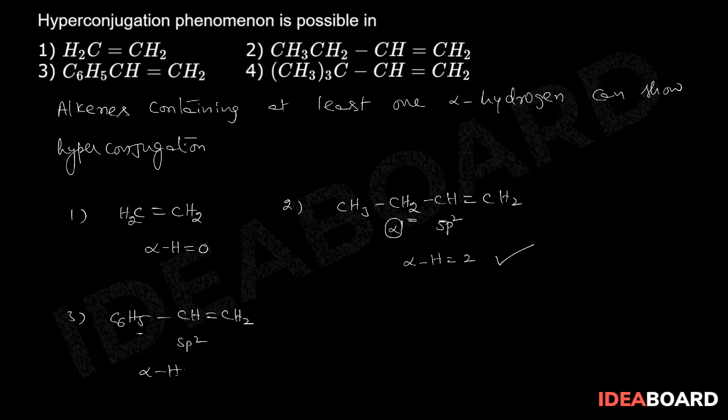In the fourth case, C(CH3)3-CH double bond CH2. Here is the sp2 carbon. Next to this is the alpha carbon, but this carbon does not have any alpha hydrogen. So alpha hydrogen is equal to zero. Option two is the correct answer.